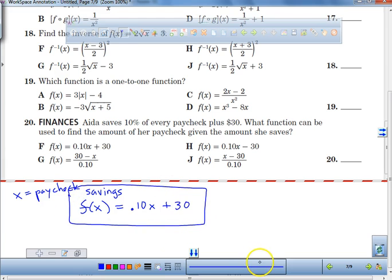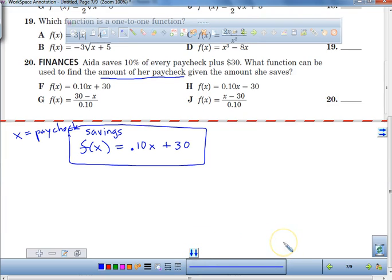So this is her savings function, everybody. S(x) = 0.10x + 30. And X is equal to her paycheck. Now it says, what function can be used to find the amount of her paycheck? Huh. So if f(x) equals the savings and X equals her paycheck, we actually need to solve for what? To solve for X. Okay? So here's what we're going to do. We're going to use the inverse. Find the inverse. Just find the inverse. That will solve for X.